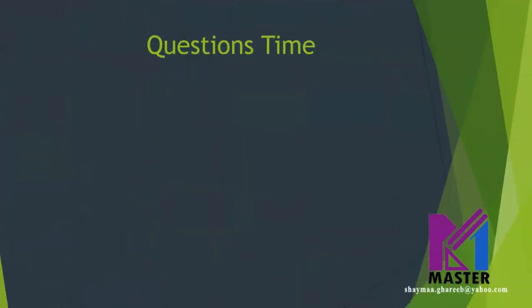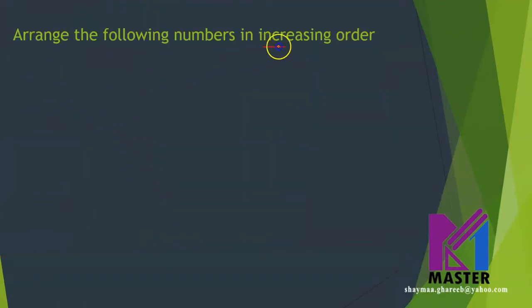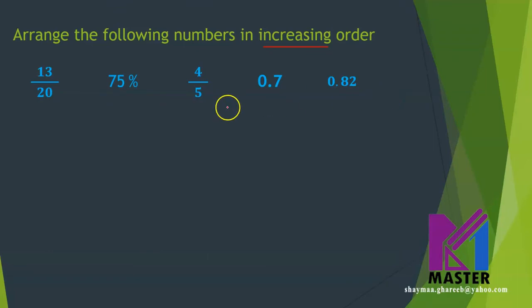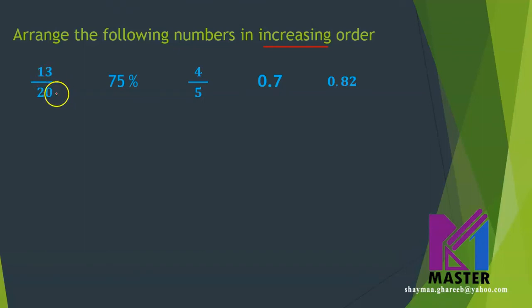Now let's go to our questions. Arrange the following numbers in increasing order. Increasing means ascending, which means starting from the smallest. I have some fractions, decimals, and percentages — all three together. What's better: to change all of them into percentages, into decimals, or into fractions? The better approach is to change them into percentages or into decimals. If I want to change 13 over 20 into a percentage, this 20 must become 100 — by multiplying by 5 up and down. So 13 times 5 gives 65 over 100, which is 65%.